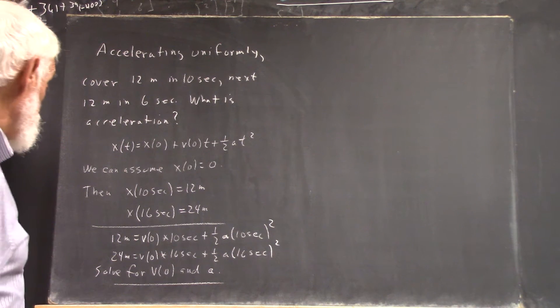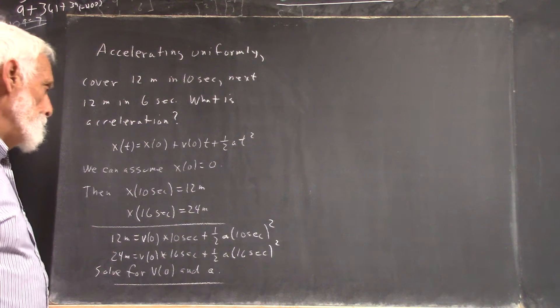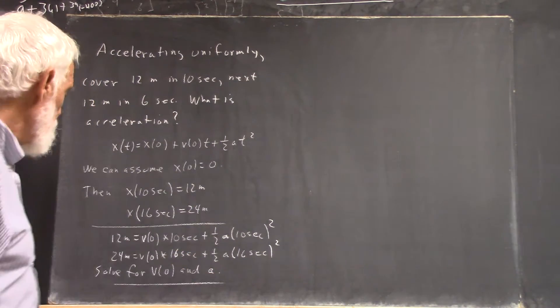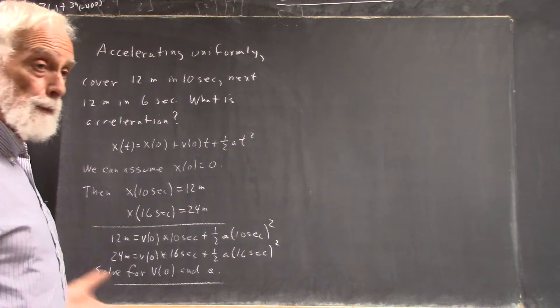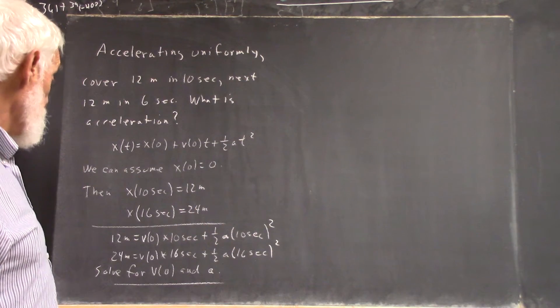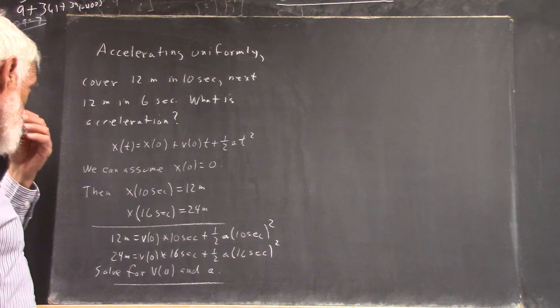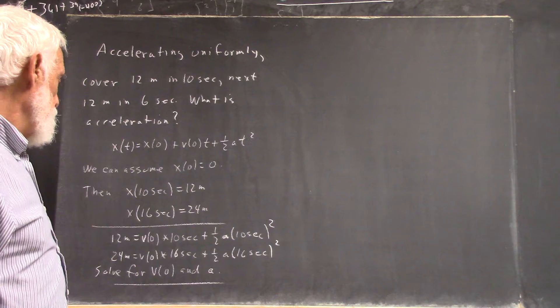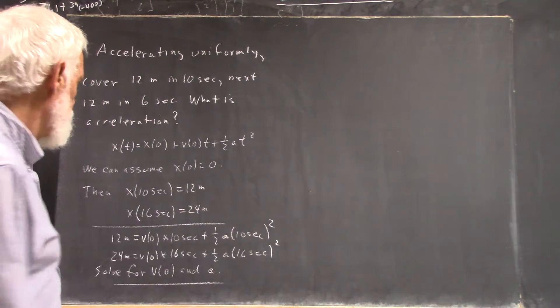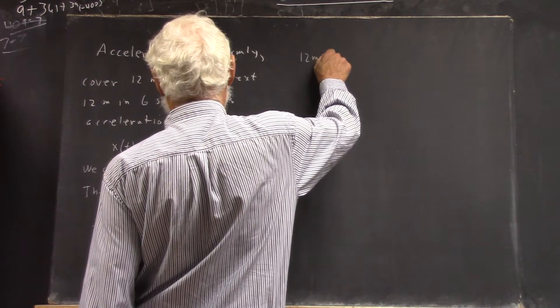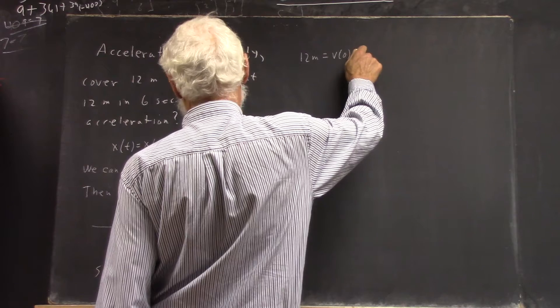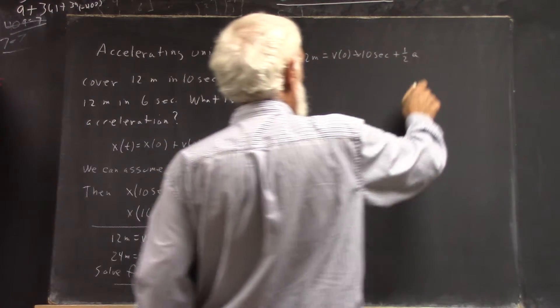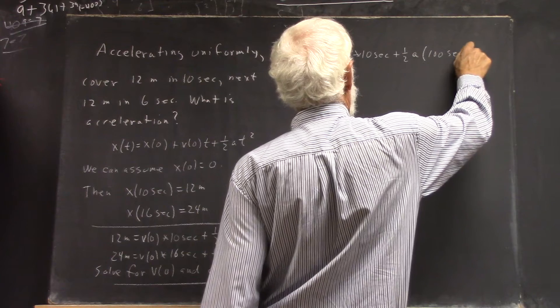Using whichever method you prefer. Now, that's all I'm going to say. Of course, if you have trouble with a problem of this nature, get this far, I'll be glad to explain further. But my strategy for solving this problem might be to, first of all, expand these. Let's go ahead and write out the equation as it's going to be. You've got 12 meters equals v(0) times 10 seconds plus 1/2 a times the square of 10 seconds. That will be 100 second squared.